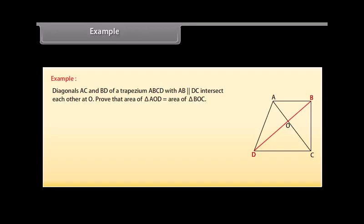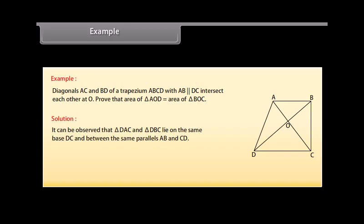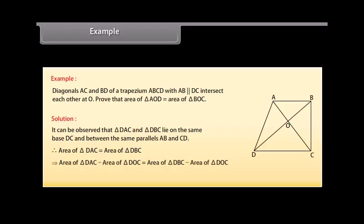Diagonals A-C and B-D of a trapezium A-B-C-D with A-B parallel to D-C intersect each other at O. Prove that area of triangle A-O-D equals area of triangle B-O-C. Solution: It can be observed that triangle D-A-C and triangle D-B-C lie on the same base D-C and between the same parallels A-B and C-D. Therefore, area of triangle D-A-C equals area of triangle D-B-C, which implies area of triangle D-A-C minus area of triangle D-O-C equals area of triangle D-B-C minus area of triangle D-O-C, which implies area of triangle A-O-D equals area of triangle B-O-C.